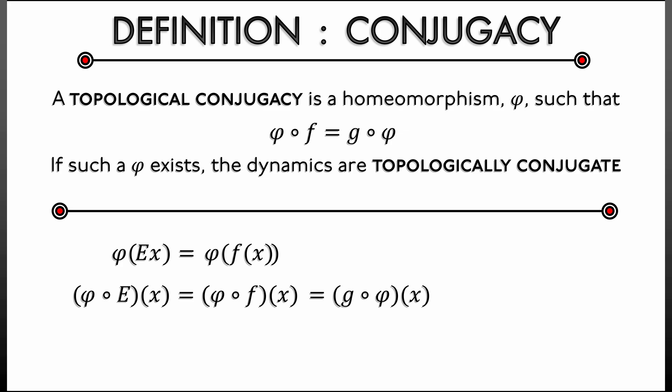Well I need one more small step. You're going to have to think a moment to convince yourself that a homeomorphism is going to commute with the shift operator, so that φ ∘ Ė is really Ė ∘ φ.